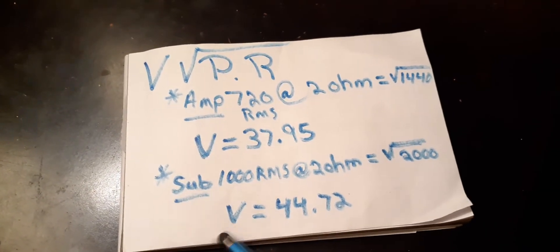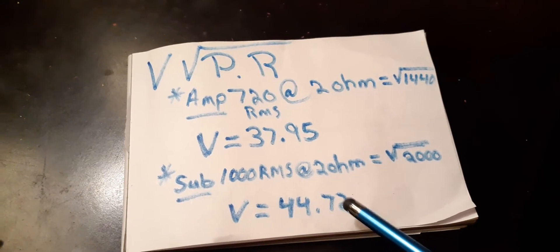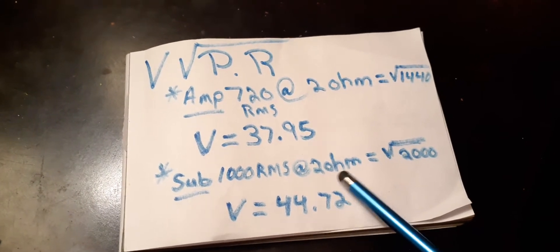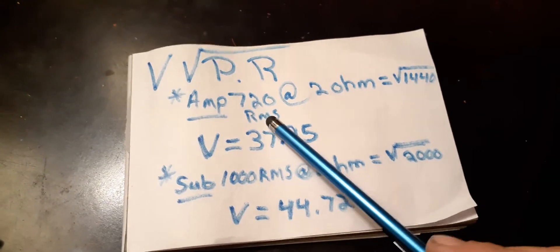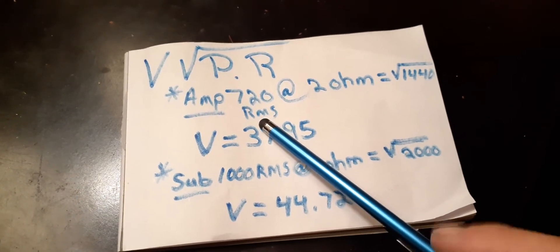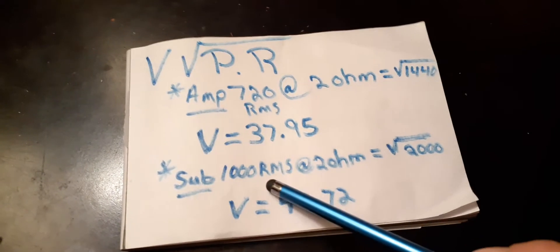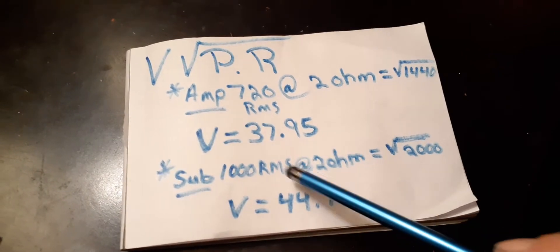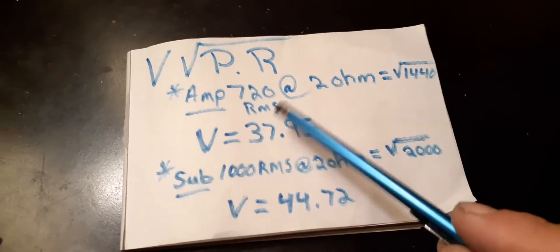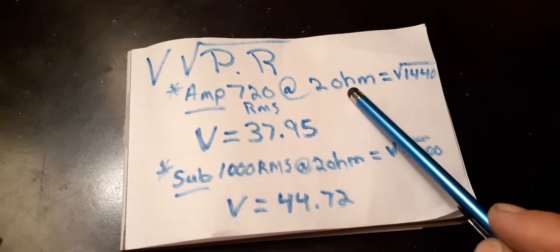But I always go with the lower number because I don't want to stress the amp out trying to push that voltage for this sub, because the amp only does this voltage at 2 ohms.